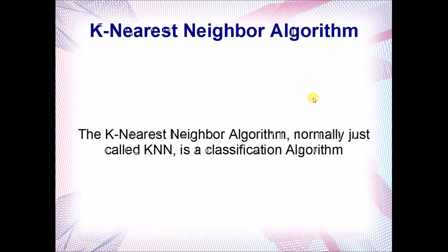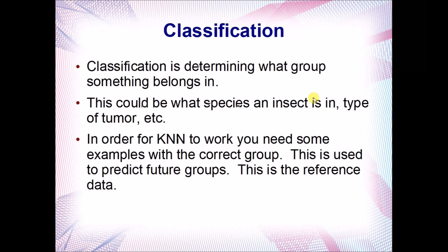The K-nearest-neighbor algorithm, normally referred to as KNN, is a computer algorithm for classification. Classification is determining what group something belongs in — this could be what species an insect is, the type of a tumor, or any type of data that needs to be put into a specific group. In order for KNN to work, you need some examples already in the correct group, used for prediction of what groups future data is in. We normally refer to this as the reference data.